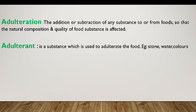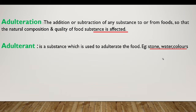Let us see what is adulteration. Adulteration is the addition or subtraction of any substance to or from food, so that the natural composition and quality of the food substance is affected. The term adulterant refers to any substance used to adulterate food — for example, stones in food grains, addition of water in milk, and addition of non-permitted colors in spices. Adulteration diminishes the quality of food and is also unethical as per food laws and standards.